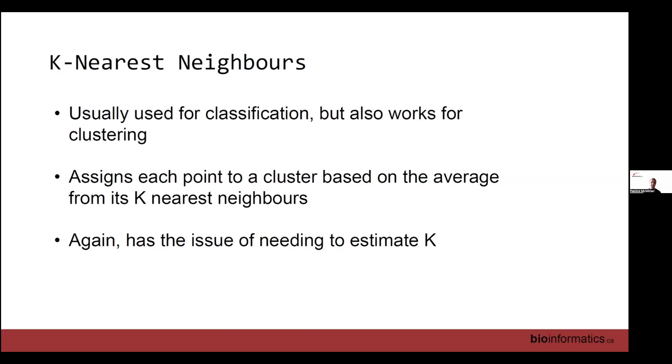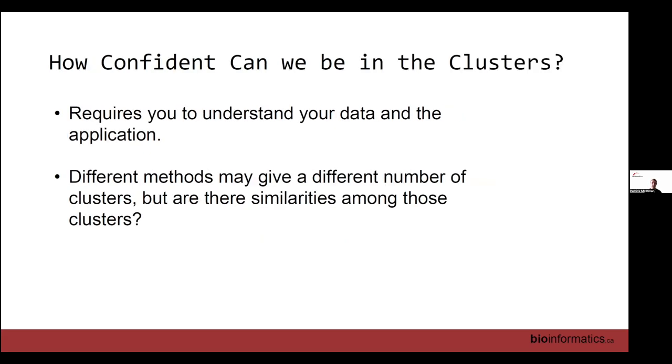The way it works is it assigns each point to a cluster based on the average from its K nearest neighbors. It identifies how close you are to these other observations and what clusters they belong to. It's going, well, most of your neighbors are in cluster number three, so we're going to assume you're also in cluster number three, and it just iterates through this. But it also has the issue of how do you estimate the number of clusters.